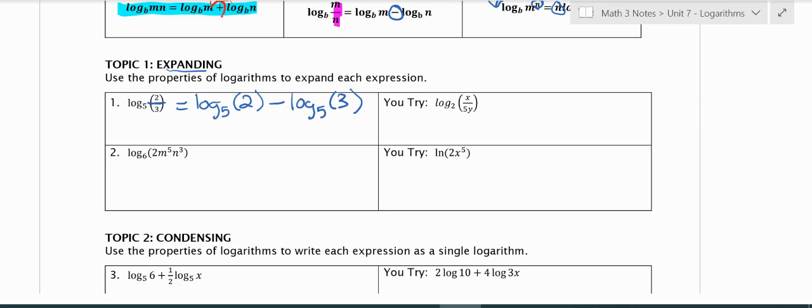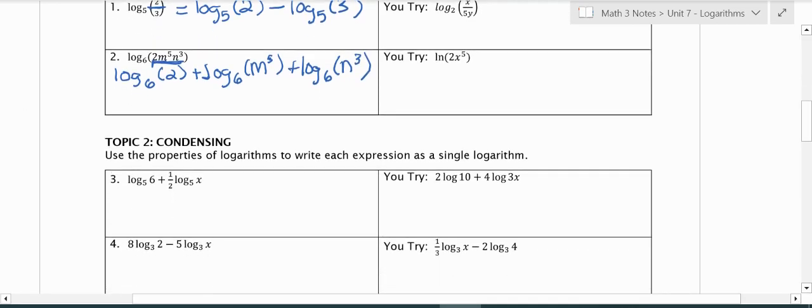The second one, same thing. I have this expression that's being multiplied. When we write this out, this is the same as log base 6 of 2 - it's multiplication - plus log base 6 of m to the 5th plus log base 6 of n to the 3rd. We're multiplying, so we're rewriting it as addition.